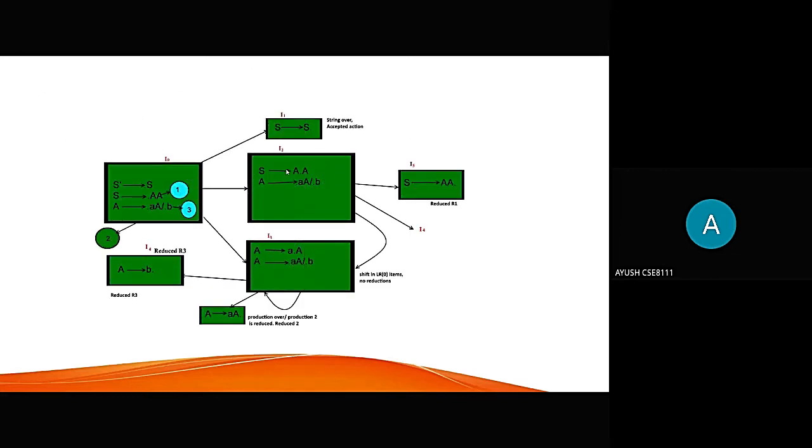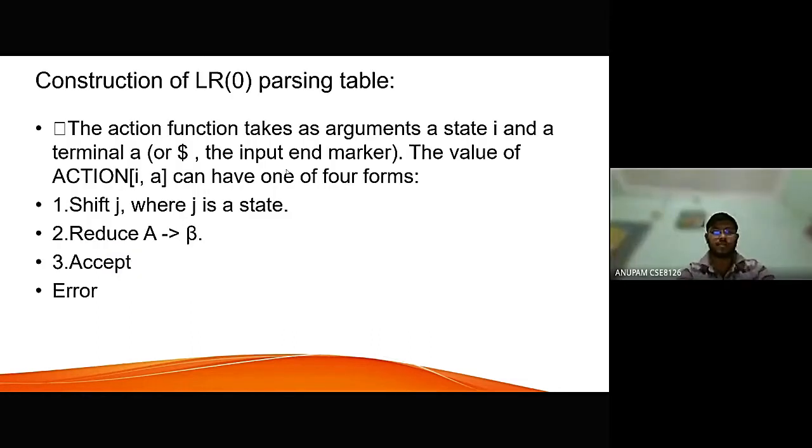In the next slide, we have this drawing of our goto operation, goto graph in which i0 gives i1, i2 and i3, and in which i1 where string is over, accepted action. Now i2 gives i5, i4 and shift in LR0 item, no reduction that will be seen in i2 to i3. Now i3 gives, simply convert to this, and A gives a, and to i4, reduce R3. Moving to the construction of LR0 parsing table.